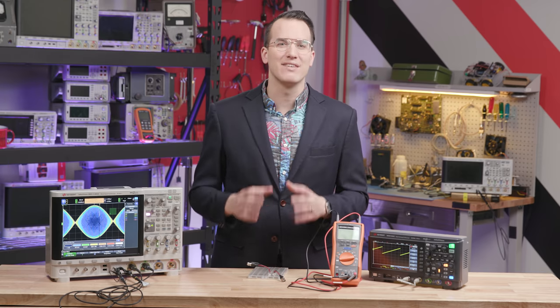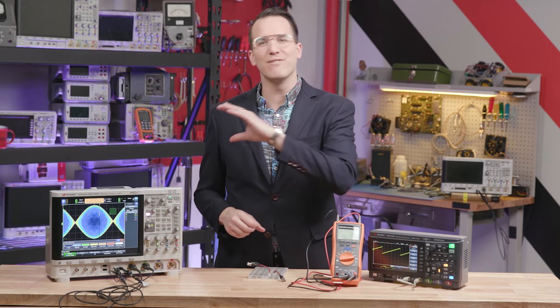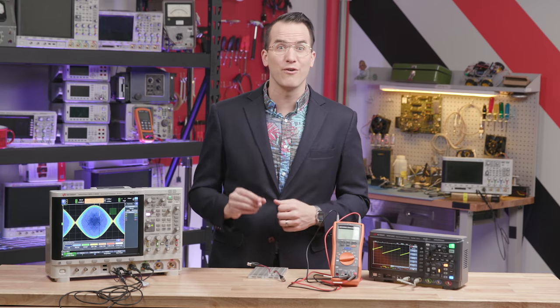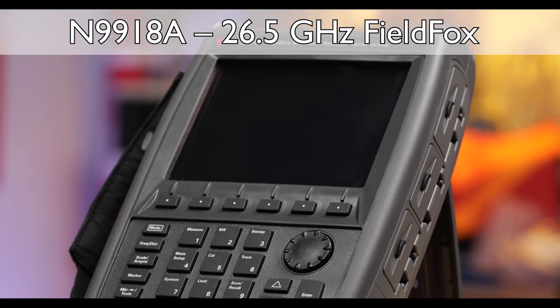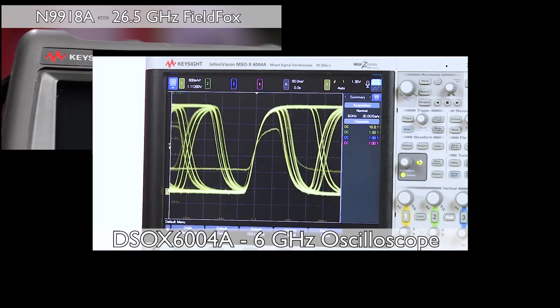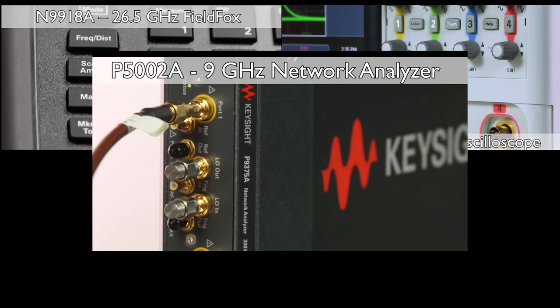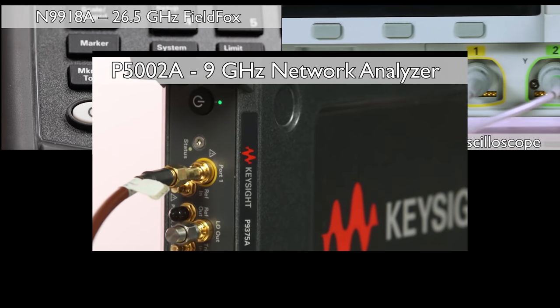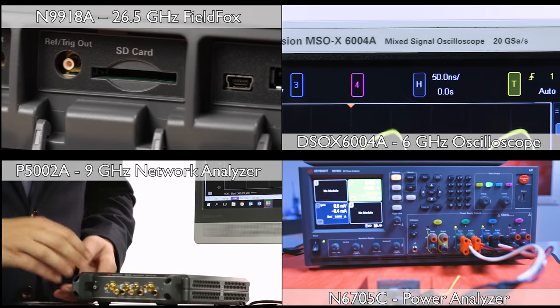And now it's time to draw today's winners. Since this Friday we'll draw five scope winners, five DMM winners, and we'll also draw our first tier one prize winner. Winners will get their choice of a N9918A 26.5 gigahertz field fox, a 6 gigahertz DSOX 6004A oscilloscope, a P5002A 9 gigahertz network analyzer, or an N6705C power analyzer.